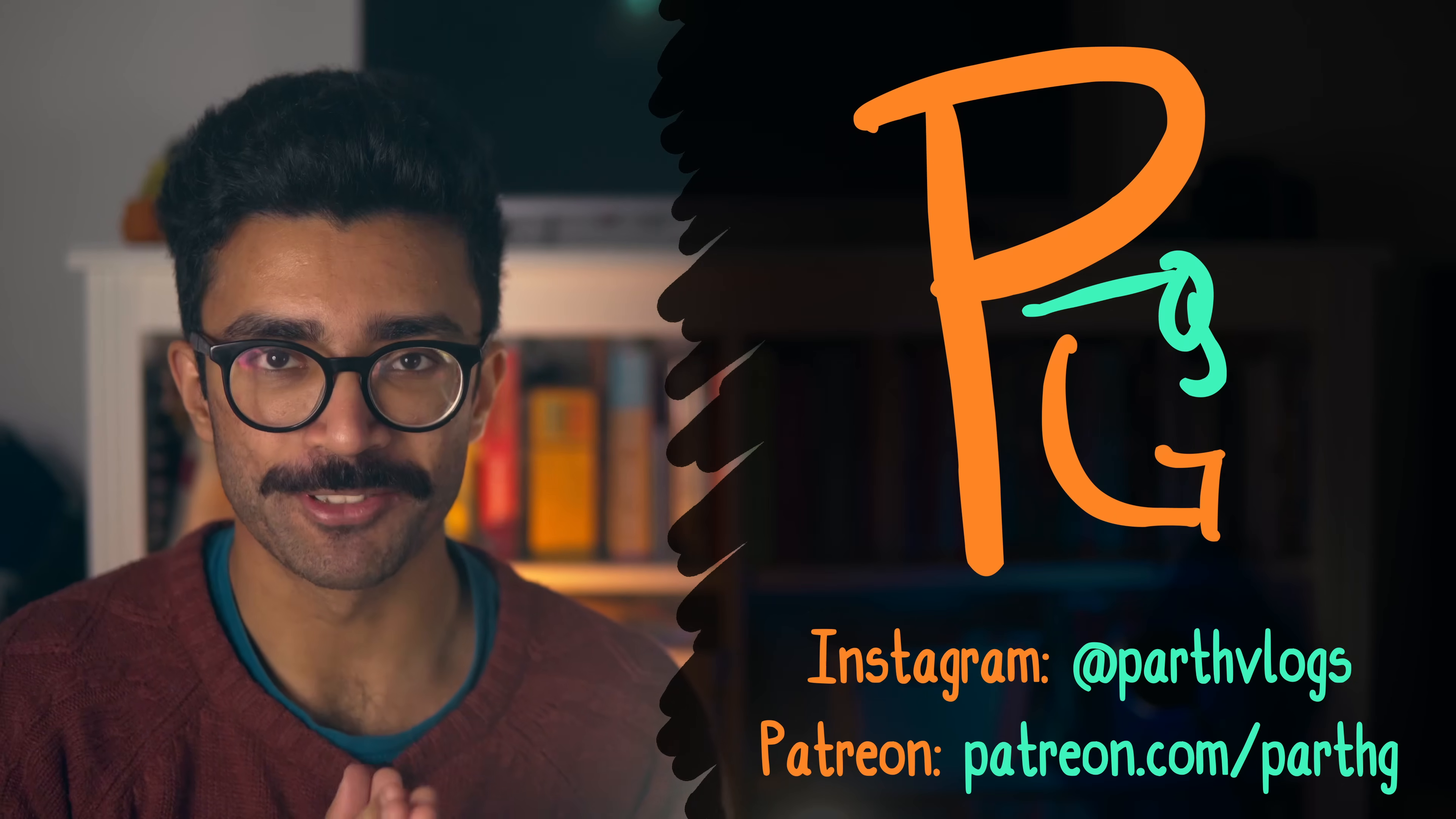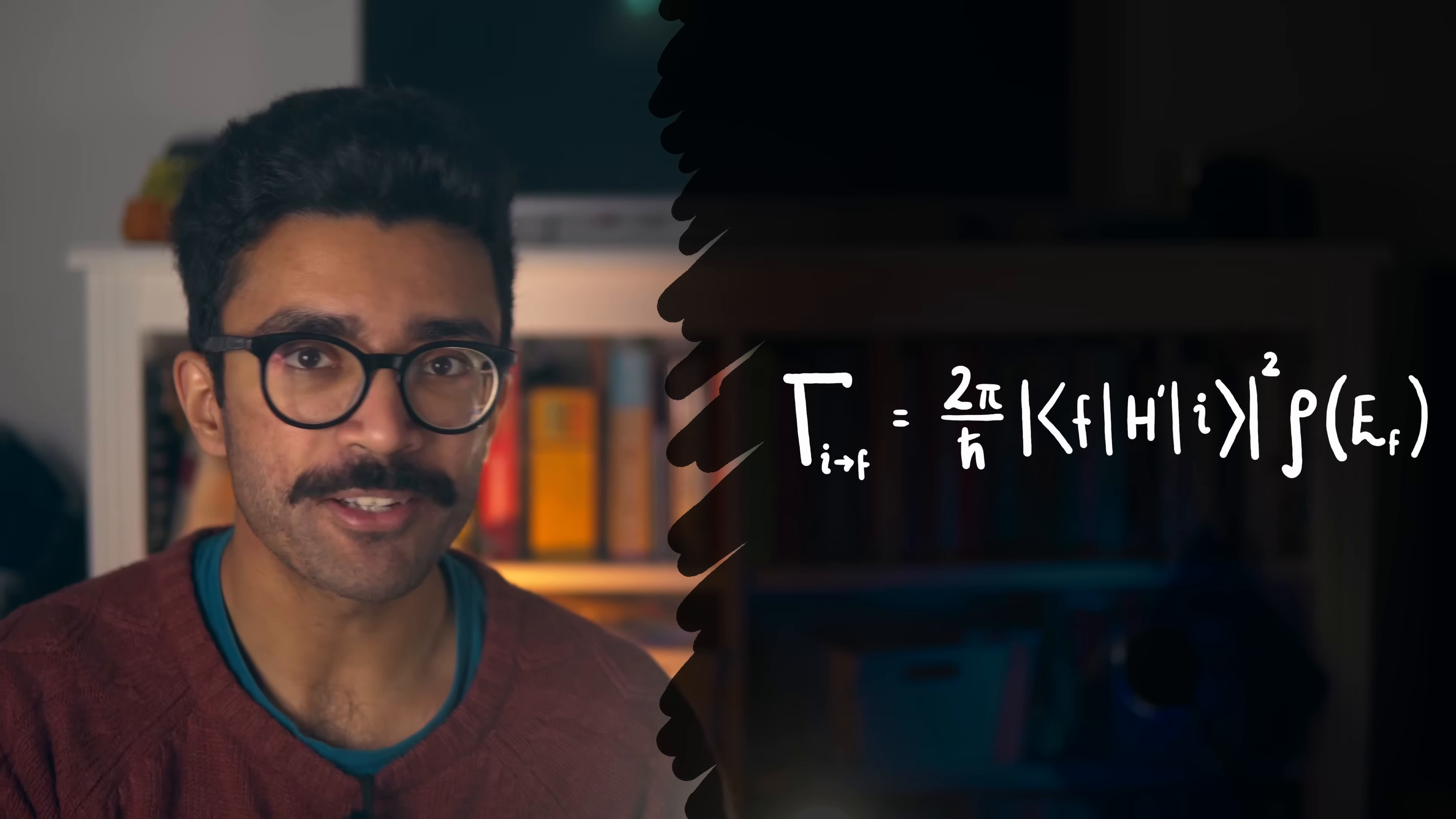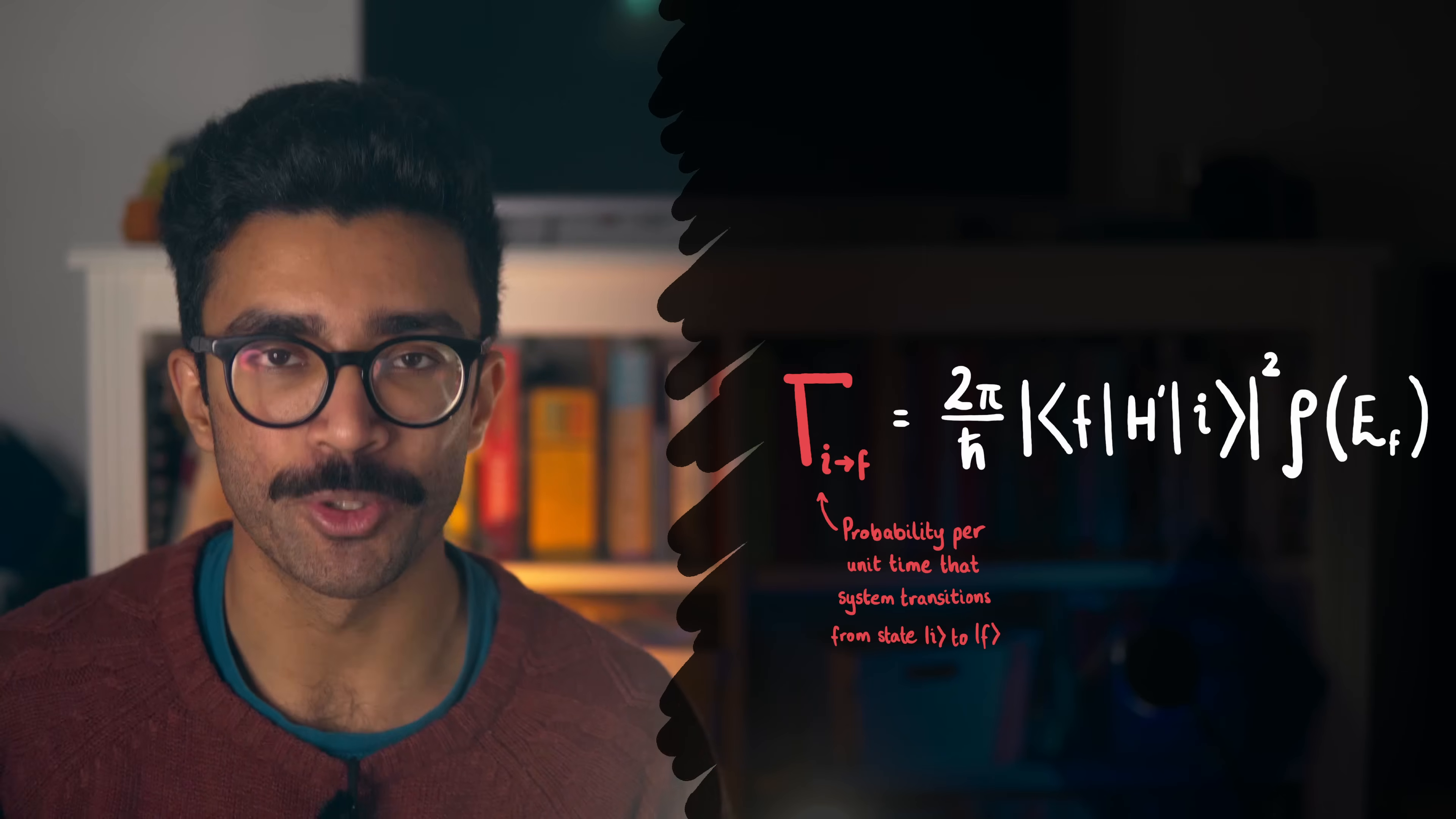So, let's talk about this Golden Rule then. Mathematically, it looks rather daunting. Here it is. But don't worry, it's actually not too complicated. What this equation describes is the probability per unit time that a quantum system that we happen to be studying transitions from one energy state to another.